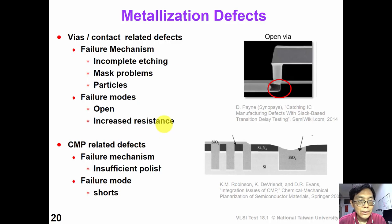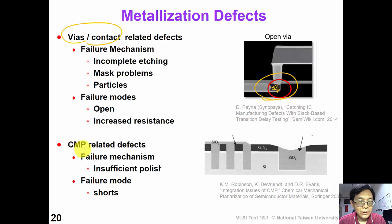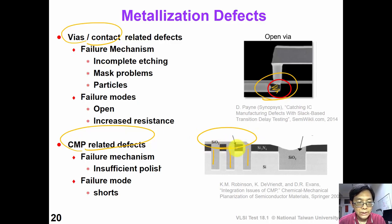Other metallization defects can come from via or contact formation. For example, incomplete etching, mask problems, or particles can cause voids in the via. Some other metallization defects can be caused by CMP (chemical mechanical polishing). In this case, three metal wires that are supposed to be disconnected remain connected due to insufficient polishing, causing a short.